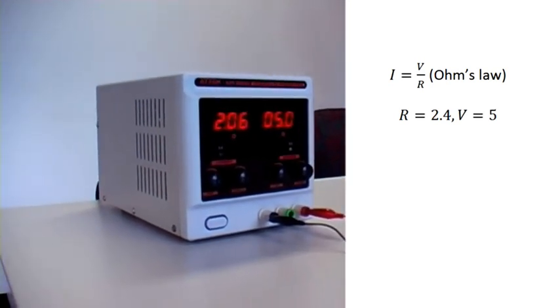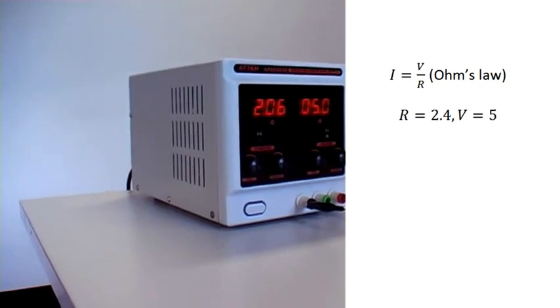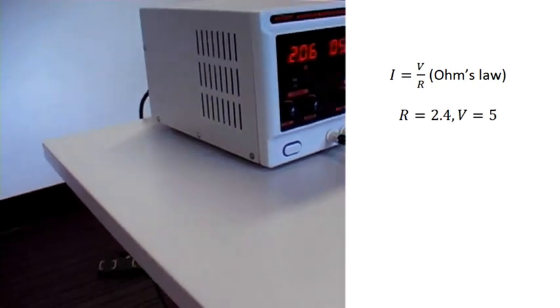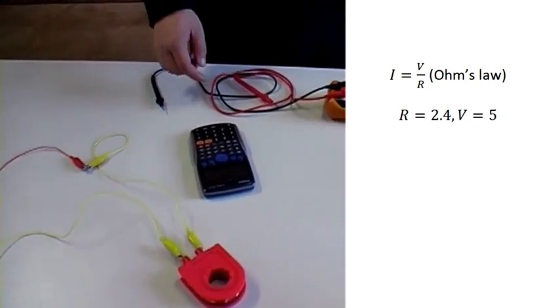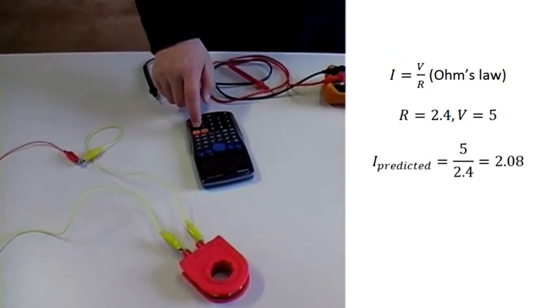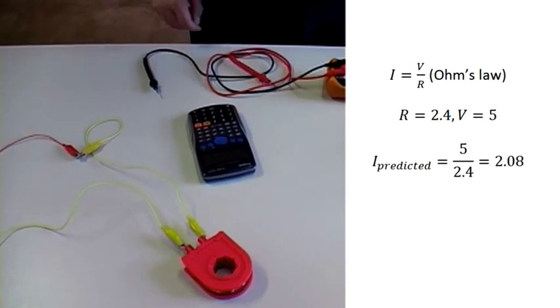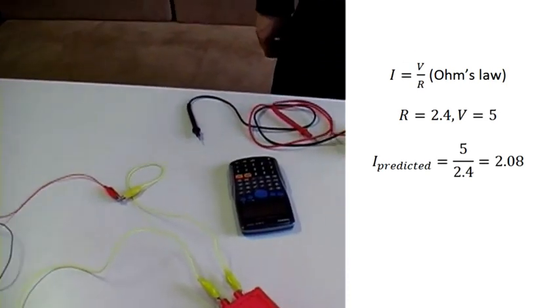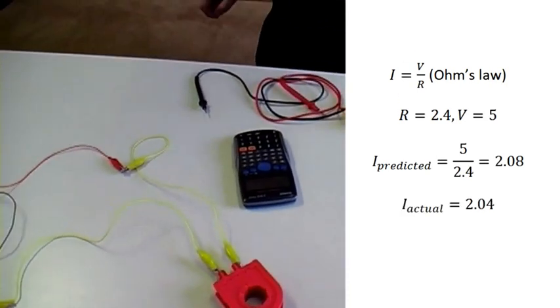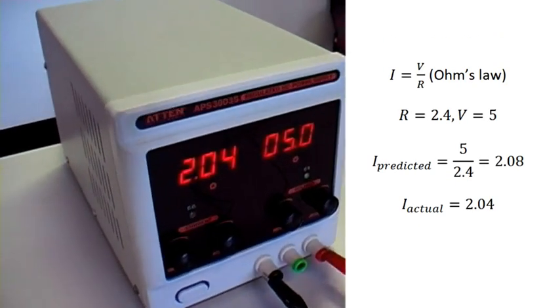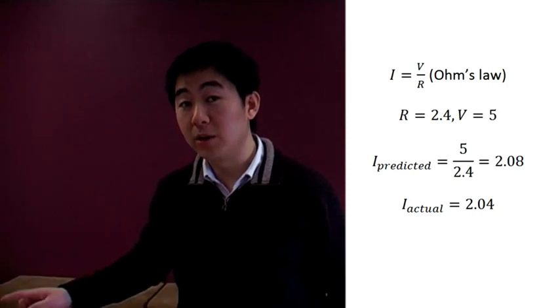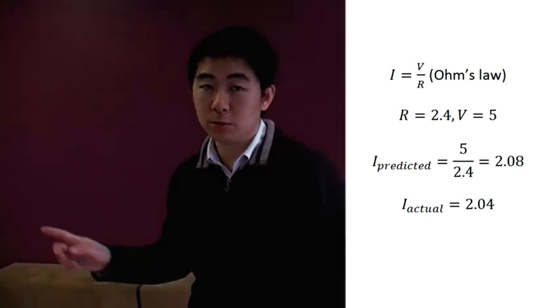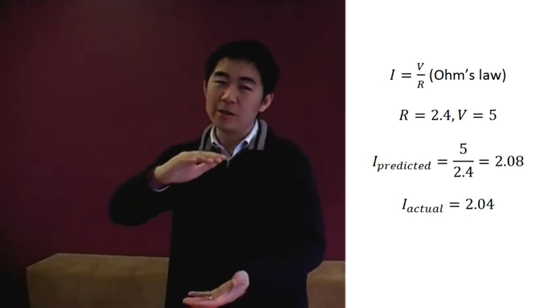If we're pushing 5 volts, we are getting 2.06 amps. With our calculator, I equals V on R once again. If we're pushing 5 volts in, 5 divided by 2.4, we should be getting 2.08 amps. Instead, we're only getting 2.04 amps. So you see the current is a bit lower than what we're expecting. And that's because this thing is actually warming up, and I can feel it.